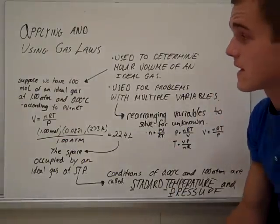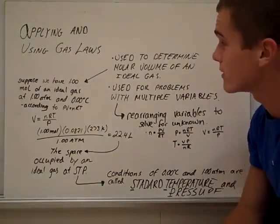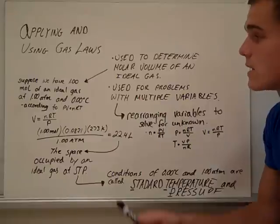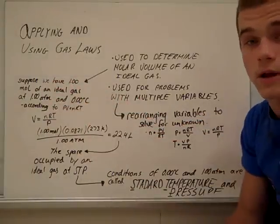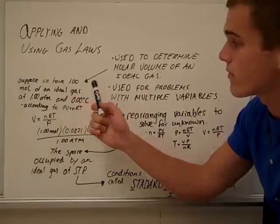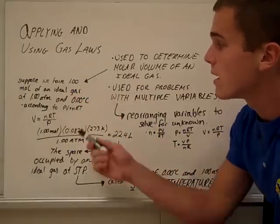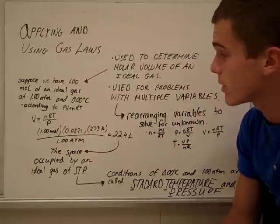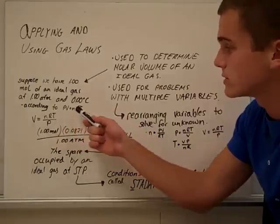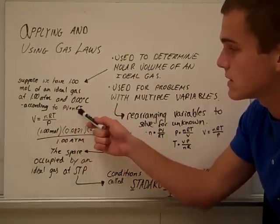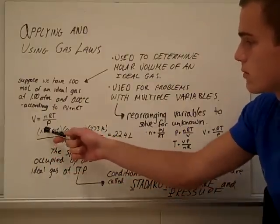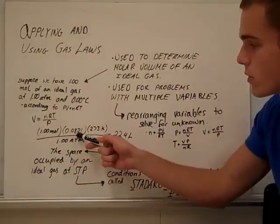Now, applying and using these gas laws is the important part of this. They're used to determine the molar volume of an ideal gas. So here we have a simple scenario. Suppose we have 1.00 moles of an ideal gas at 1.00 atmospheres and 0.00 degrees Celsius. And according to PV equals NRT, we can rearrange for volume and plug in our values. We use 0.0821 for R.